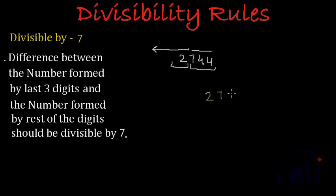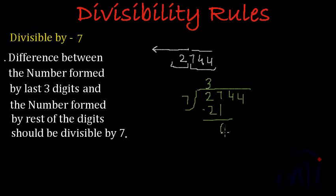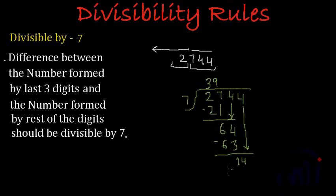We divide 2744 by 7. 7 times 3 is 21; subtract from 27 to get 6. Bring down 4, making 64. 7 times 9 is 63; subtract to get 1. Bring down 4, making 14. 7 times 2 is 14; subtract to get remainder 0. So we have got 0 as the remainder, which proves that 2744 is divisible by 7.